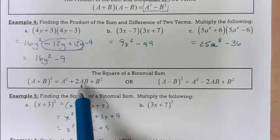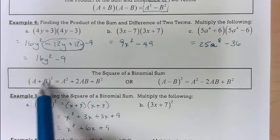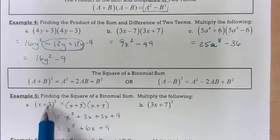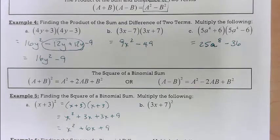And as for the middle, I multiply A times B and double it. So A times B, that would be 3x, double it would give me 6x.